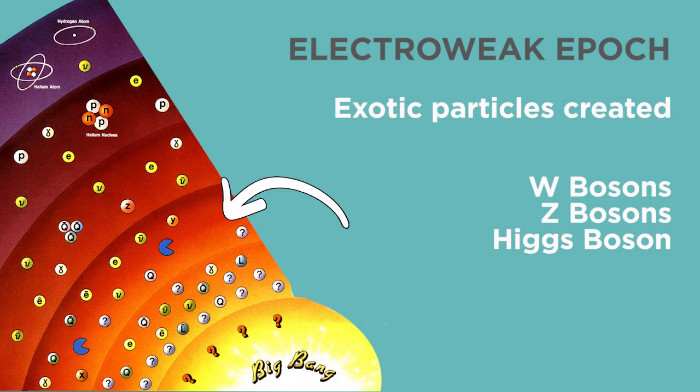At about 10 to the negative 32 seconds, we enter the electroweak epoch, characterized by the creation of large numbers of exotic particles, including the W and Z bosons, as well as the Higgs. The Higgs field is essential to this part of the Big Bang because it slows the particles down enough to actually create atoms, basically allowing matter to be created out of pure radiation.